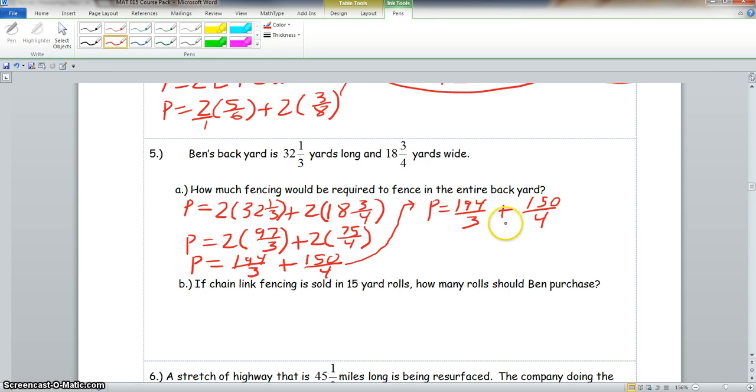Now, we find the common denominator. The common denominator of 4 and 3 is 12. We found that in our previous problem. So our denominator, our new denominator, we know, will be 12. Now, 12 divided by 3, we know, is 4. So that means that we will multiply this numerator and denominator by 4.